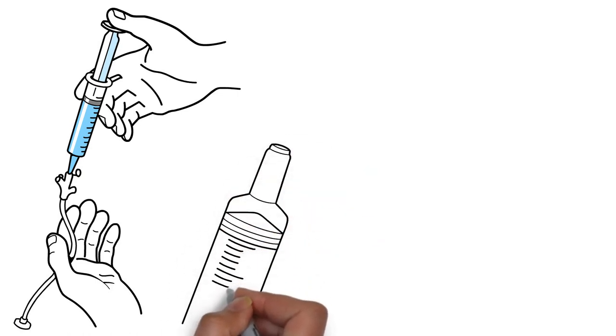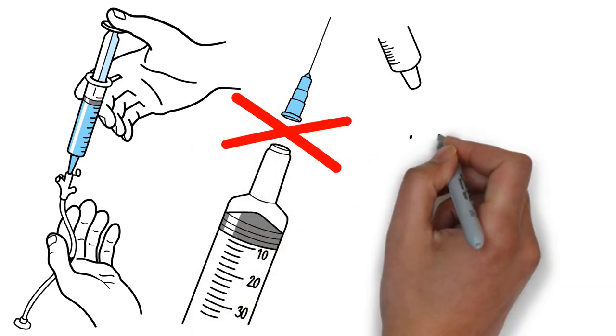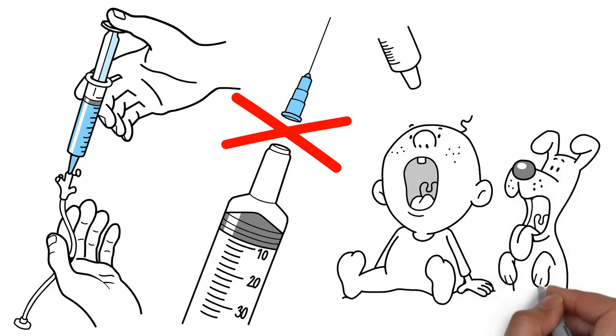Oral dose syringes look similar to a luer slip tip but are oversized to prevent a needle from being attached. Oral dose syringes are commonly seen with oral medication, especially for pediatrics or animal medicine.